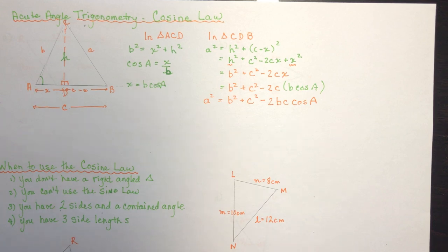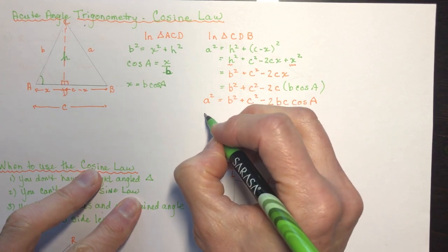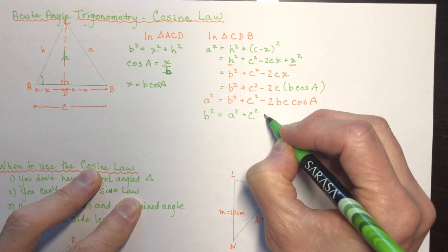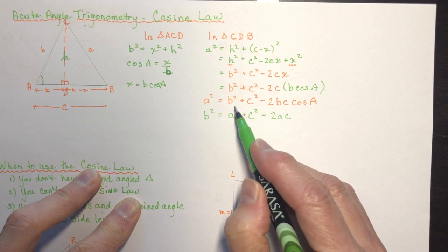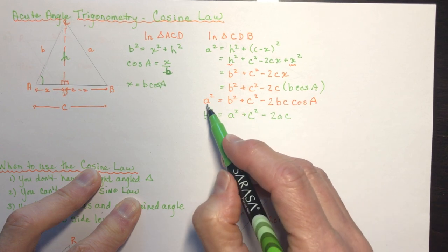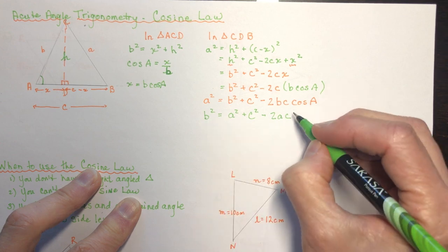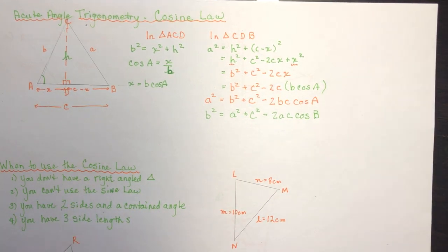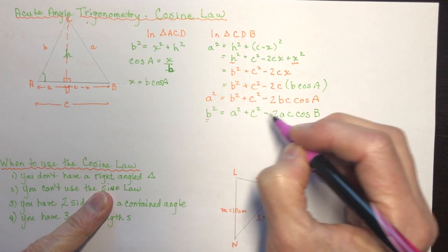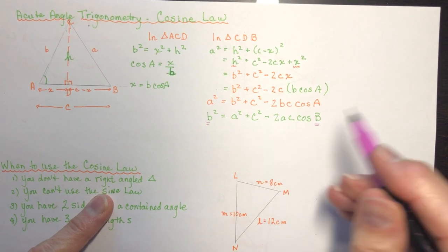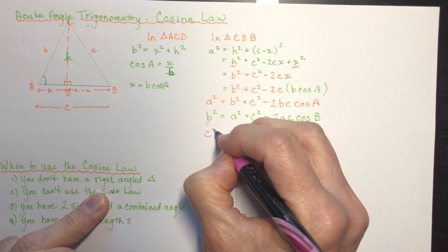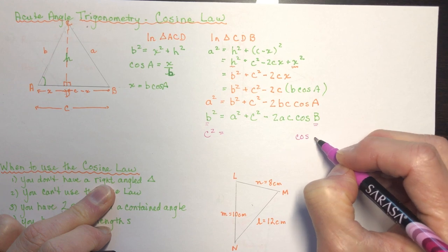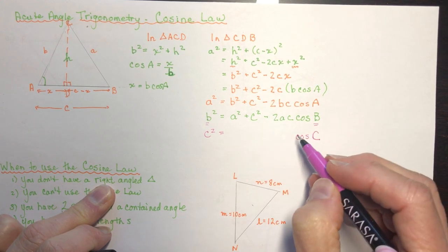You could write this for any side. For b squared, you'd have b squared equals a squared plus c squared minus 2ac times cosine of B. Notice the pattern: the side squared on the left matches the angle in the cosine term. For c squared, it would be c squared equals a squared plus b squared minus 2ab times cosine of C.